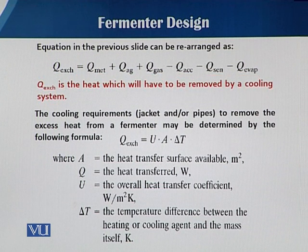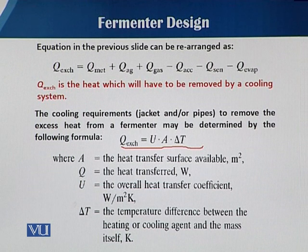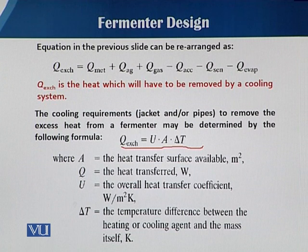When we know how much heat is required, we use the equation: Q_exchange = U · A · ΔT. Here A is the heat transfer surface area available — as already discussed, a jacket provides less surface area while cooling coils provide more. U is the overall heat transfer coefficient and ΔT is the temperature difference.